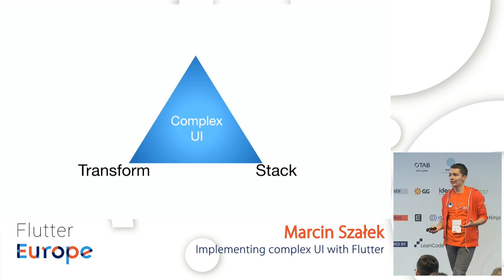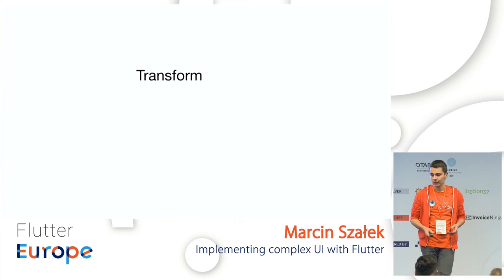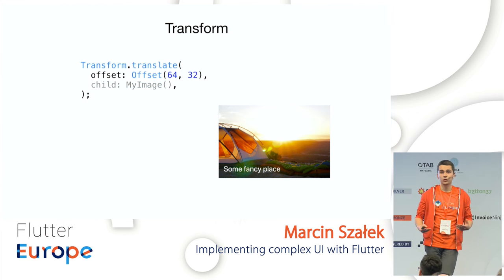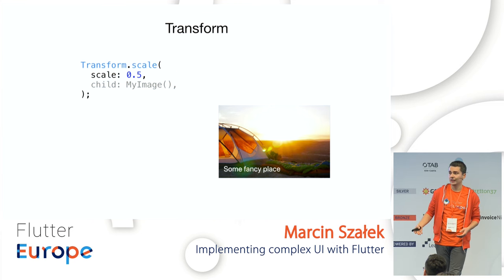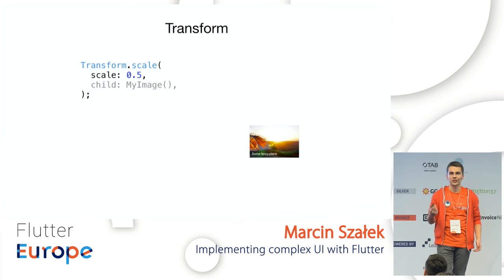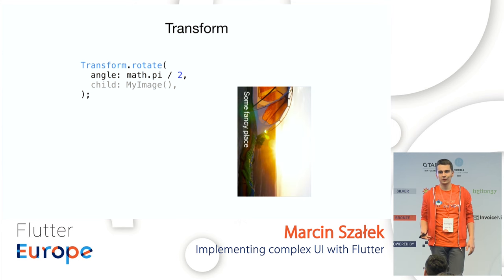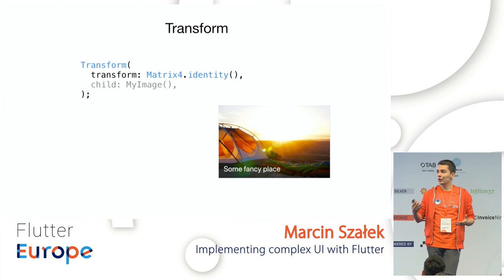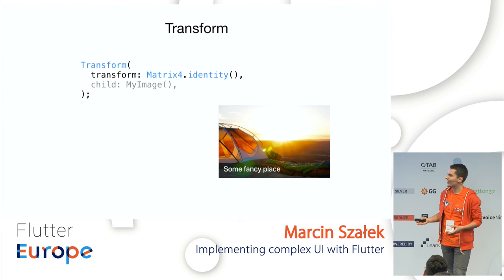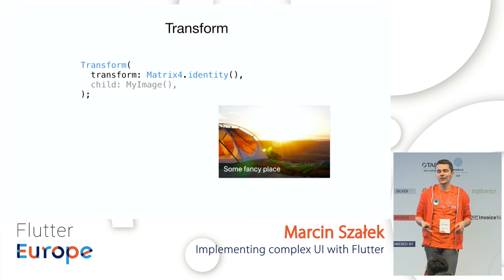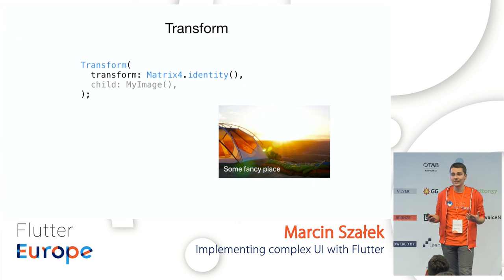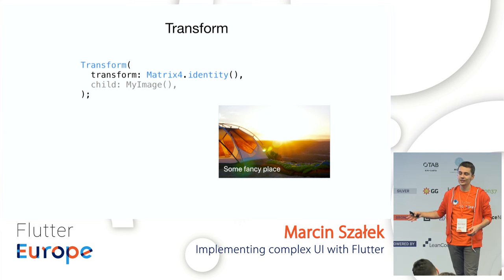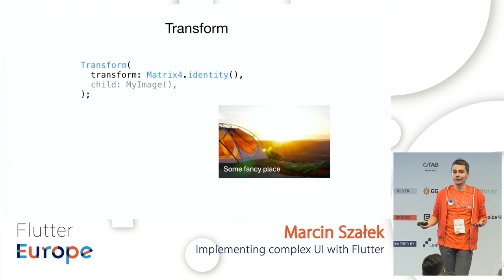The second widget is Transform. Transform is a widget that helps us change the way another widget is painted. For example, if we have an image, we can use Transform.translate with an offset to move it, or Transform.scale to shrink or enlarge it, or Transform.rotate with an angle to rotate it. Those are the three basic constructors of Transform. There's also the default constructor which accepts a matrix. Don't worry — matrices in Flutter/Dart are really simple. The most basic one is a matrix identity, which basically does nothing, like wrapping with a container.